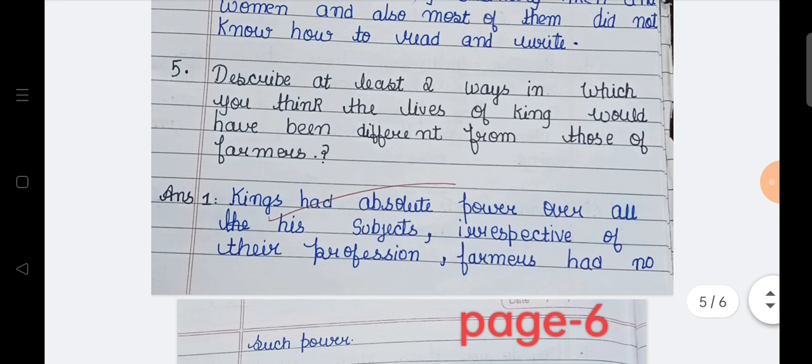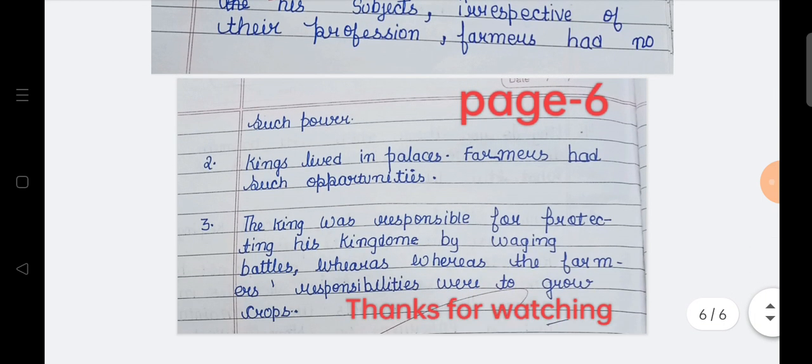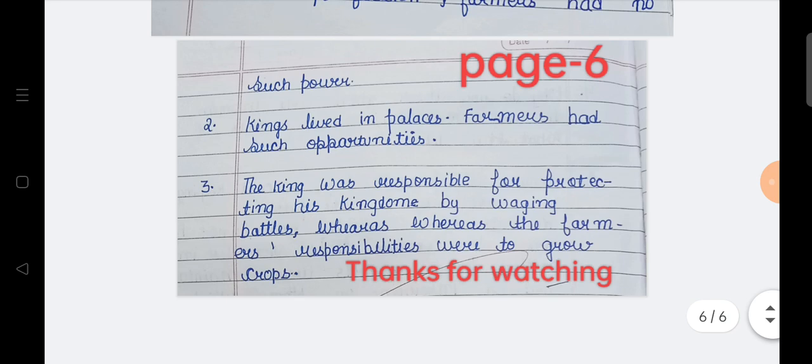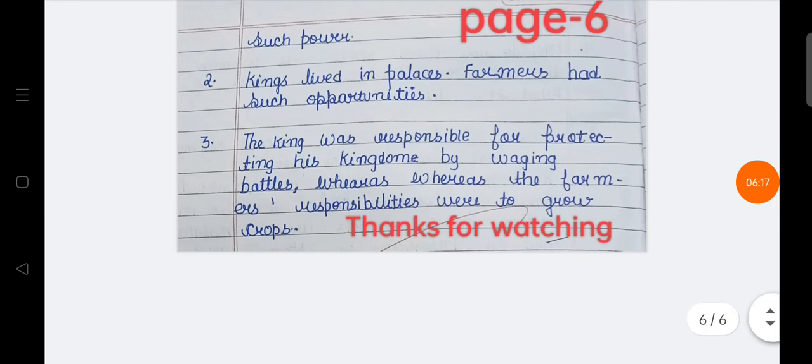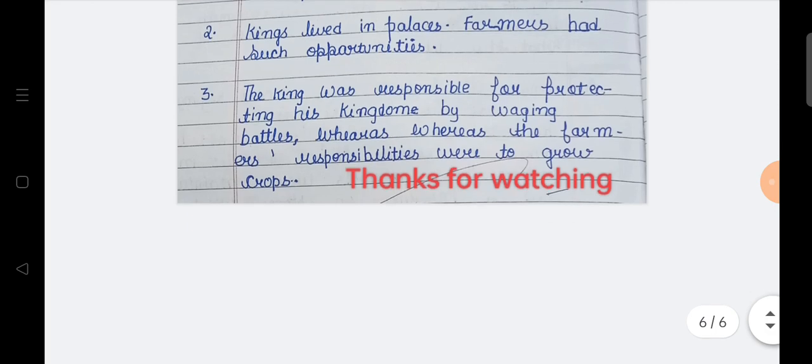So I hope you understand the fifth question. Now second reason is, kings lived in palaces. Farmers had such opportunities. Third is, the king was responsible for protecting his kingdom by wagging battles, whereas the farmers' responsibilities were to grow crops.